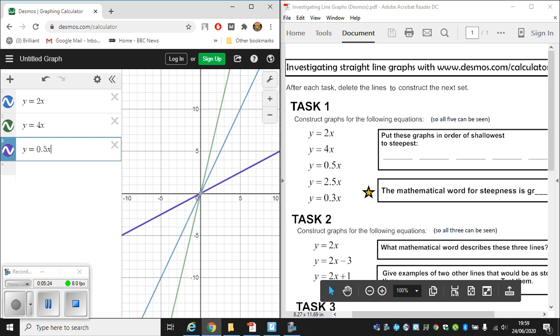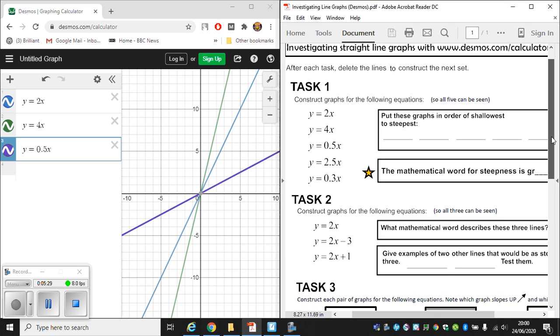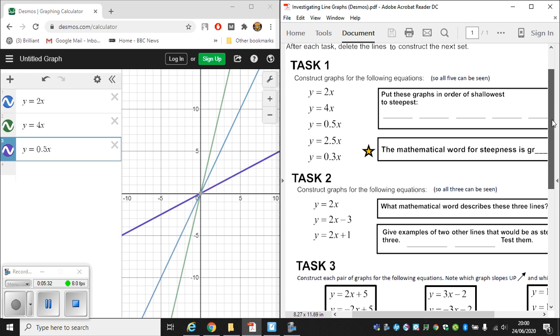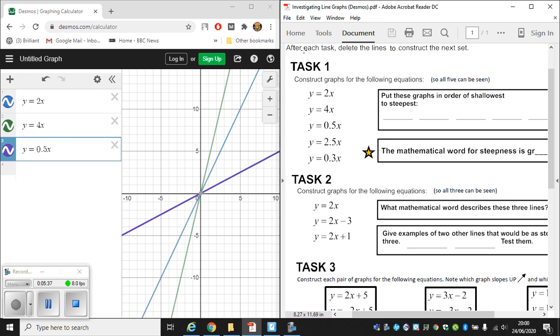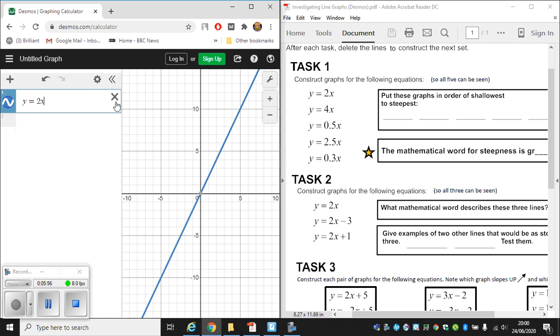There's then a bonus question here with a star. But it's only if you have an idea on how to answer this. You don't have to worry about the star questions if you're not too sure. Before moving on to task number two, it does say after each task delete guidelines to construct the next set. So if you want to delete any of the graphs we produce, which I'm going to do now, there's a little x. It's quite faint before you hover over with your cursor. Select it. I'm going to click on it. I'll make my last graph disappear. And then this one. And then finally this one. So I've now got an empty coordinate grid.